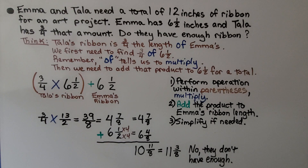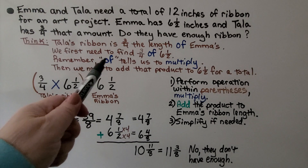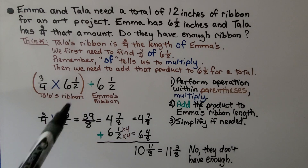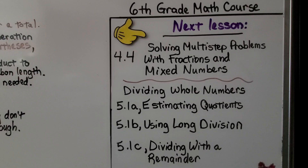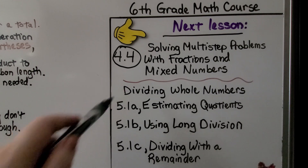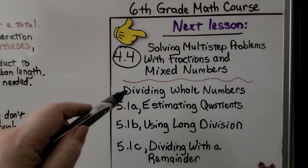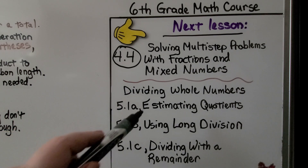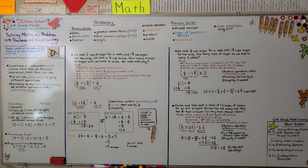Use common sense and clue words: 'of' tells you to multiply; 'combined total' means add; 'difference' means subtract. Make sure to do operations within parentheses first. We've completed lesson 4.4 and will move on to module 5. Lesson 5.1 is about dividing whole numbers and is split into three parts: 5.1A, B, and C. Have a great day — I hope you'll join me for the next video!